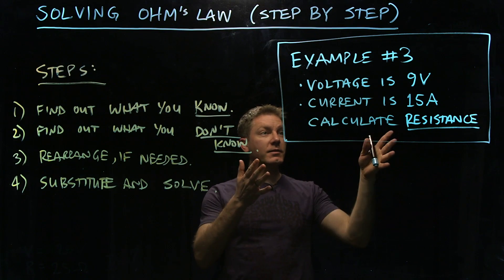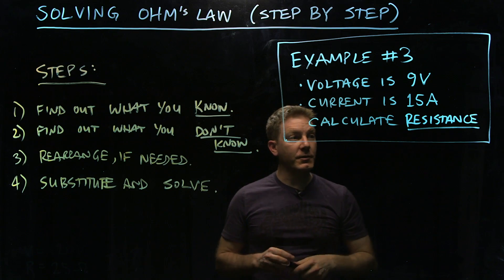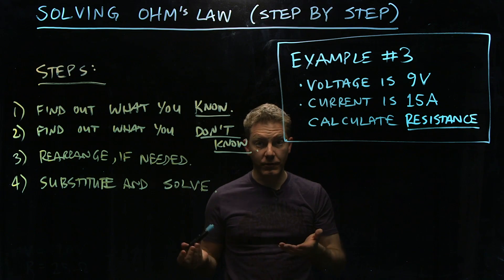Example 3: voltage is 9 volts, current is 15 amps, calculate the resistance. So they always give you two, you find the third one.